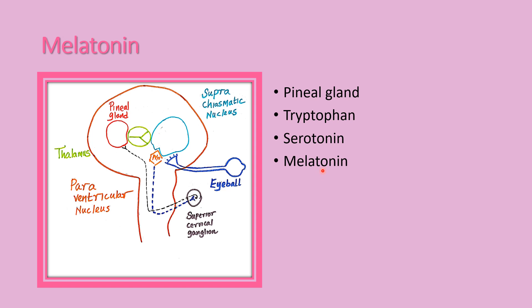The melatonin secretion depends on the light and dark cycle. During the dark period, the impulse travels through the eyeball to the optic nerve, and it reaches the suprachiasmatic nucleus of the hypothalamus. The suprachiasmatic nucleus is marked as the biological clock.